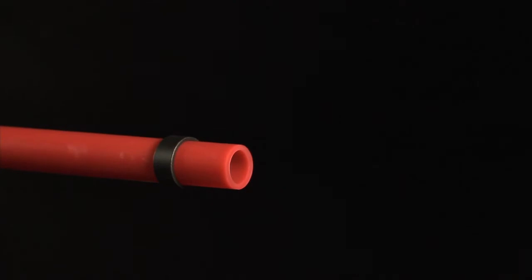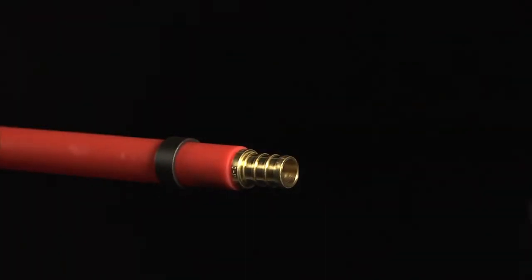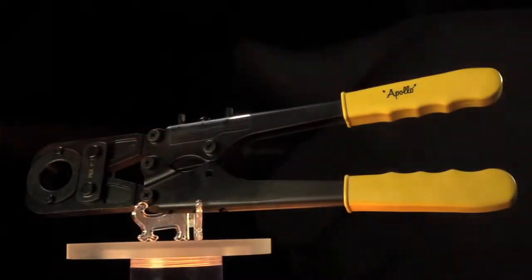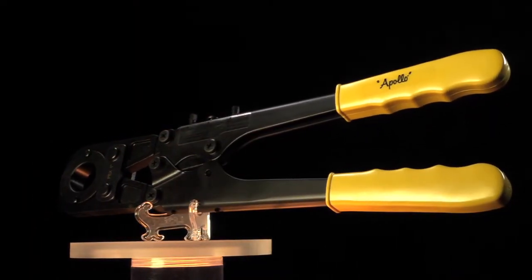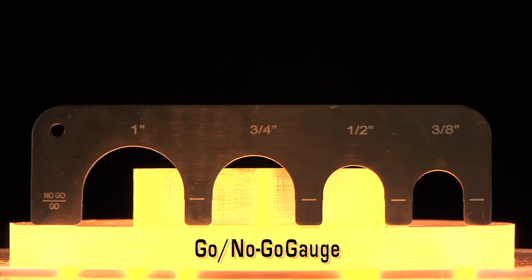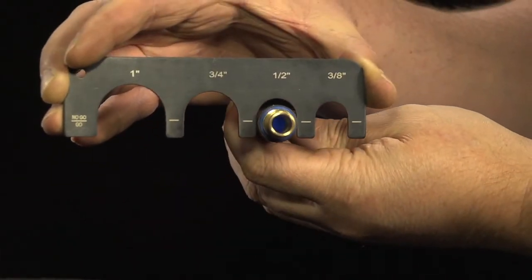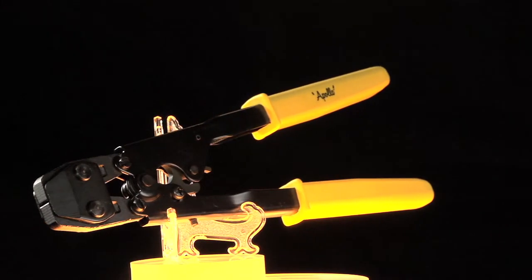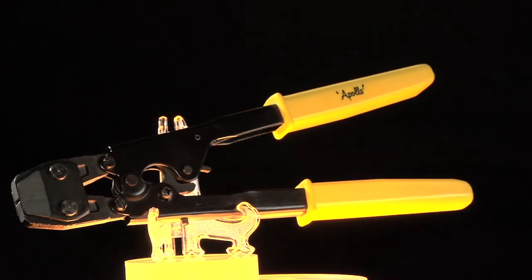Slide the ring or clamp over the end of the tubing. Insert the fitting into the tubing. Move the ring or clamp until it's one-eighth to one-quarter inch from the end of the tubing. Use the Apollo PEX crimp tool to crimp the ring around the tubing and fitting. Test the crimp with the Apollo GO slash NO-GO gauge to ensure a proper seal. Use the Apollo PEX pinch clamp tool to fasten the pinch clamp around the tubing and fitting.